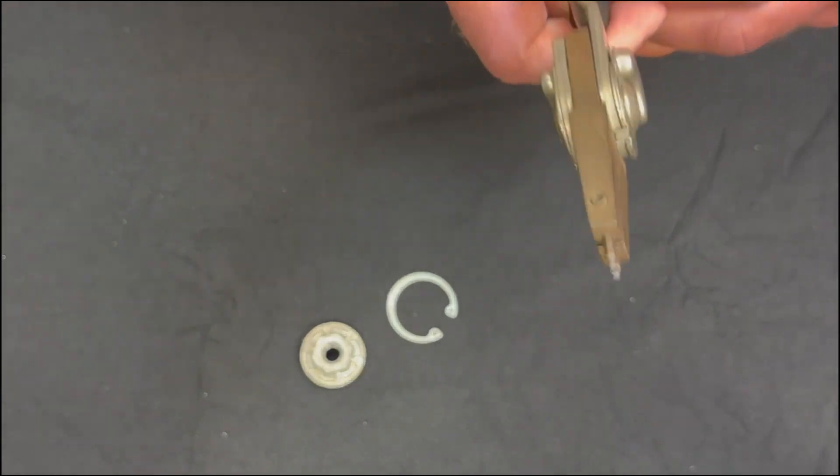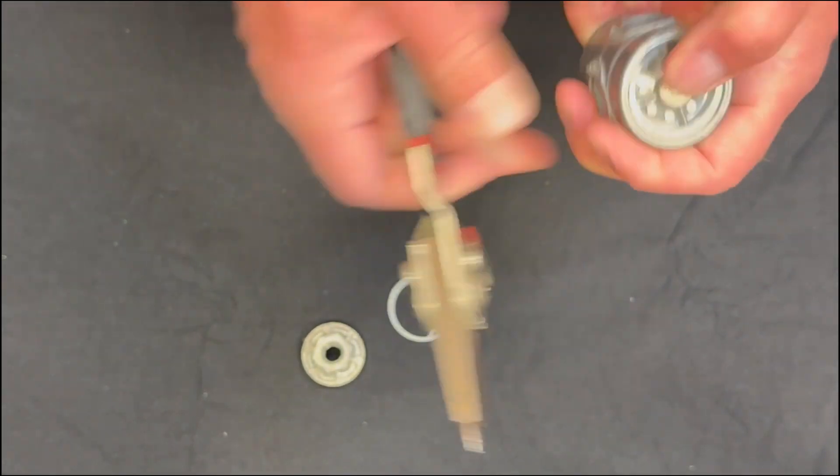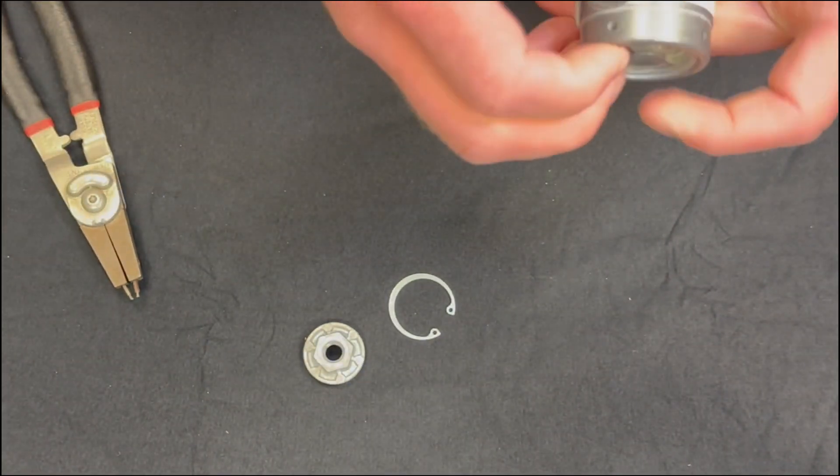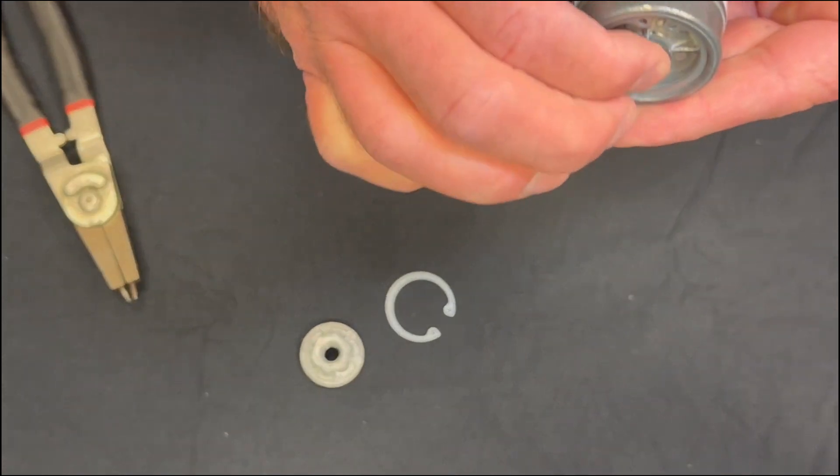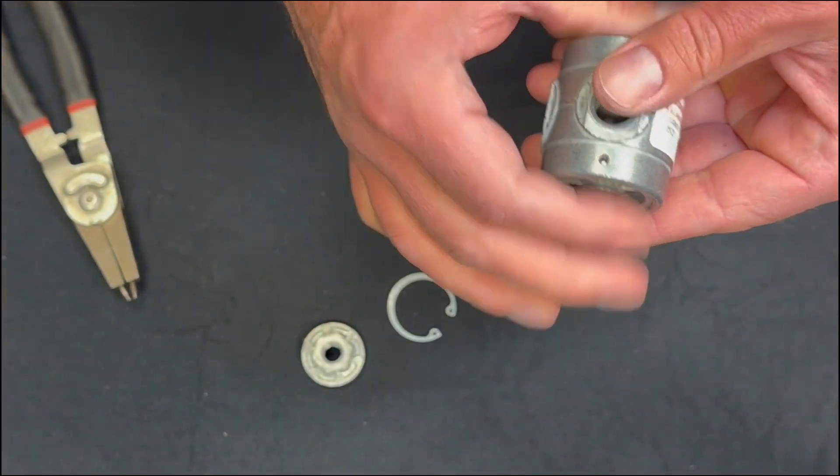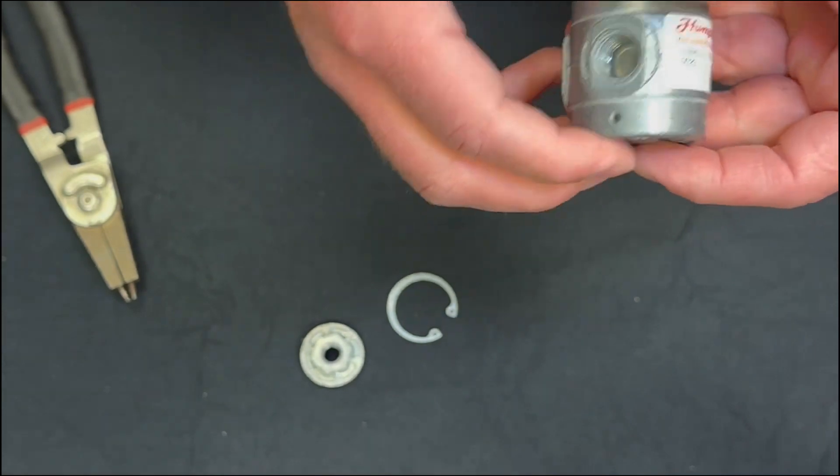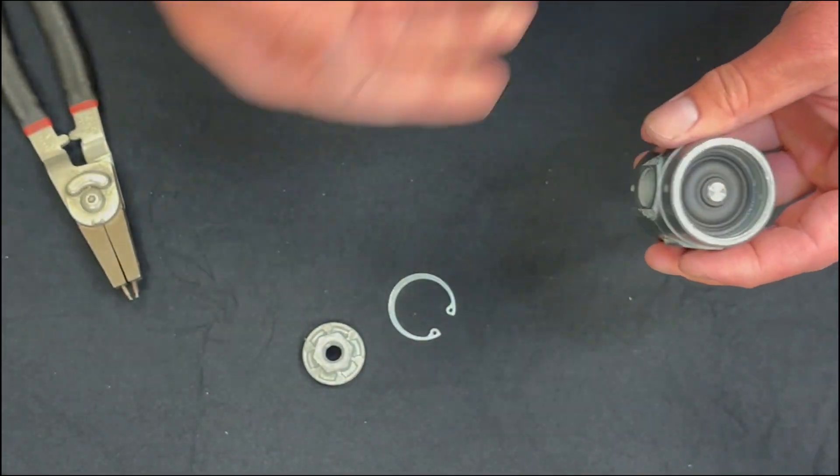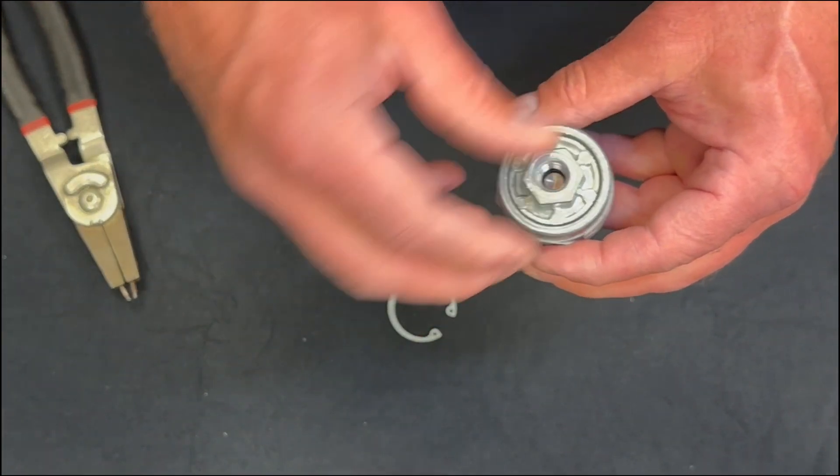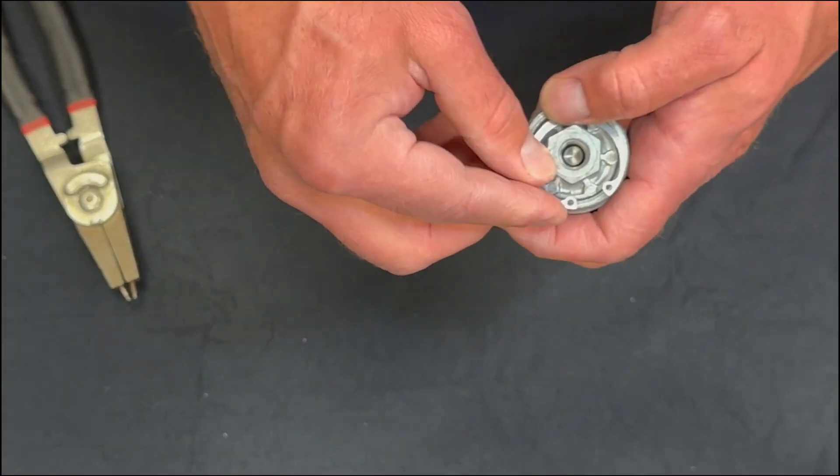If you're having issues getting the spring in place, one thing that can be done is this can be set into a vise and just gently squeezed on either end and the snap ring will snap directly into place. Once the bottom cap is in place, replace your top cap and replace your top spring.